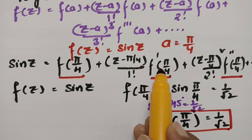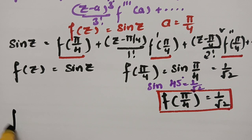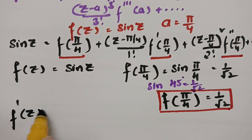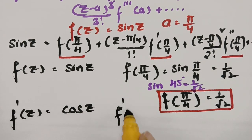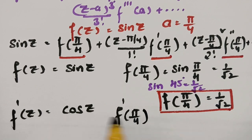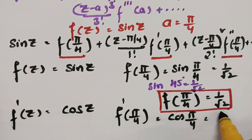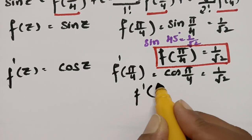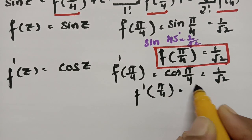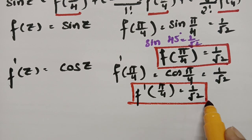Next we need f'(π/4). The derivative of sin(z) is cos(z), so f'(π/4) = cos(π/4) = cos(45°), which is again 1/√2. Therefore, f'(π/4) = 1/√2.